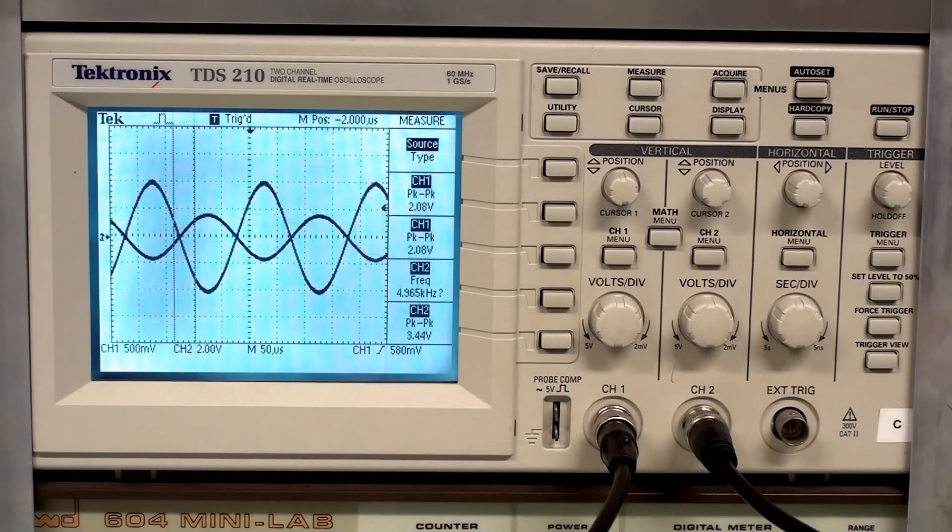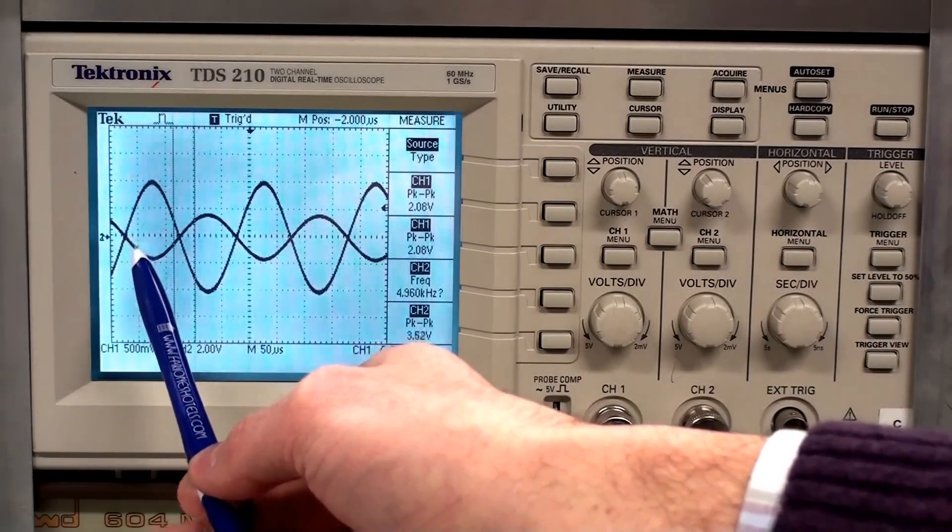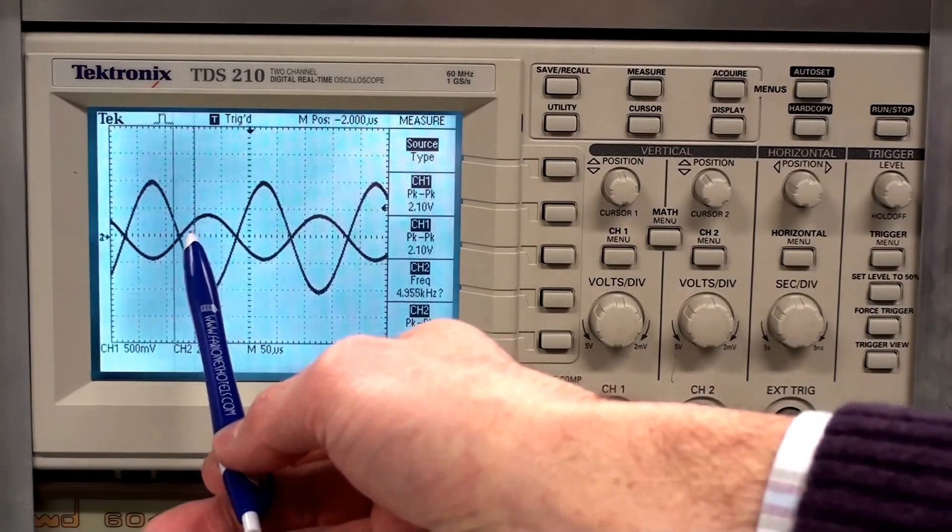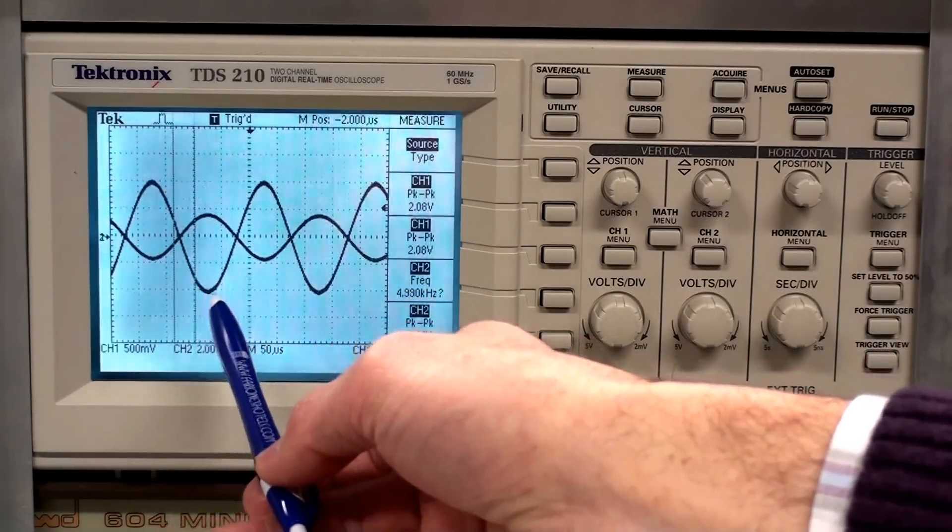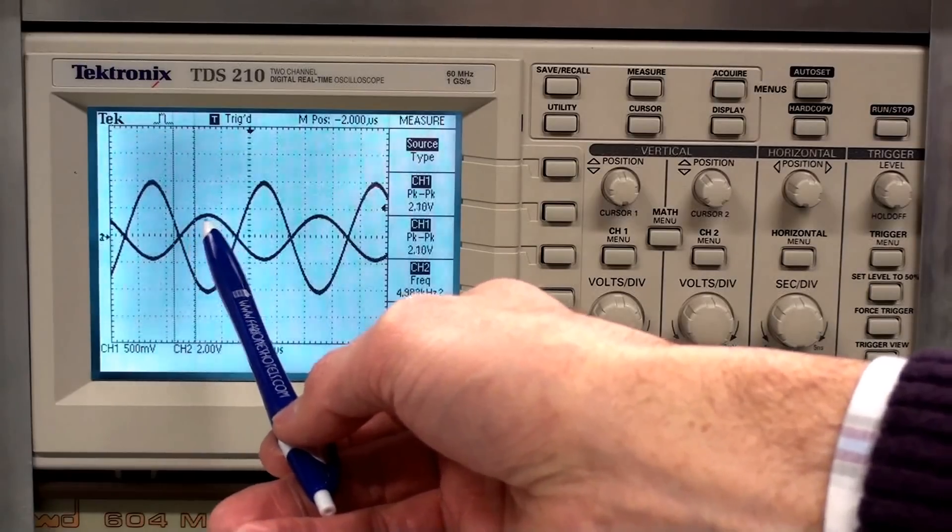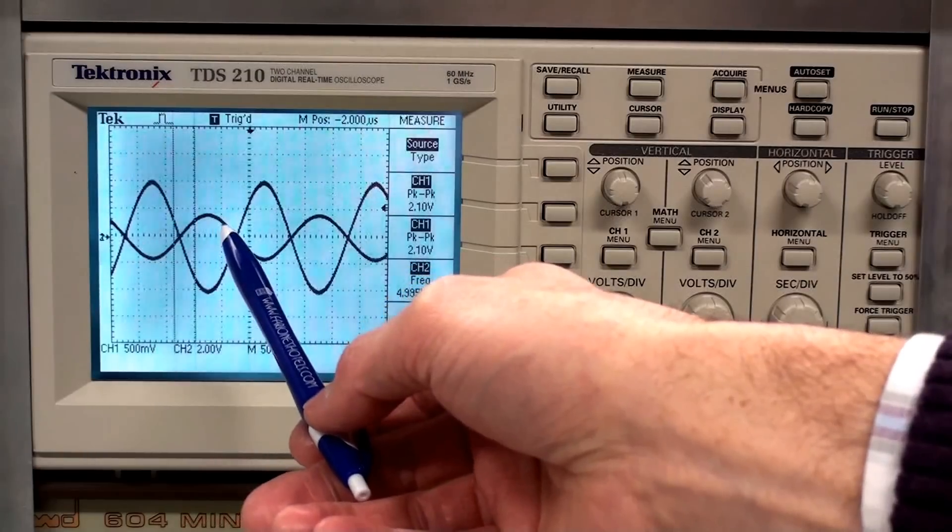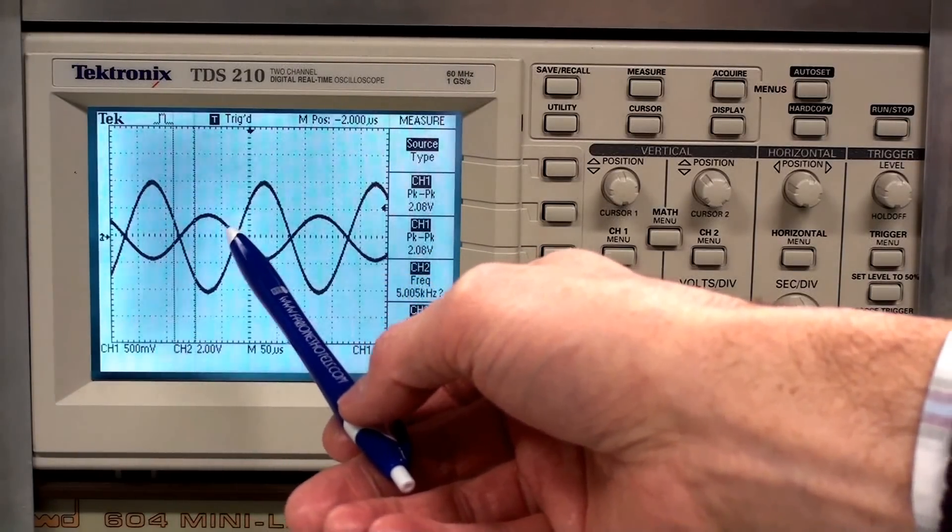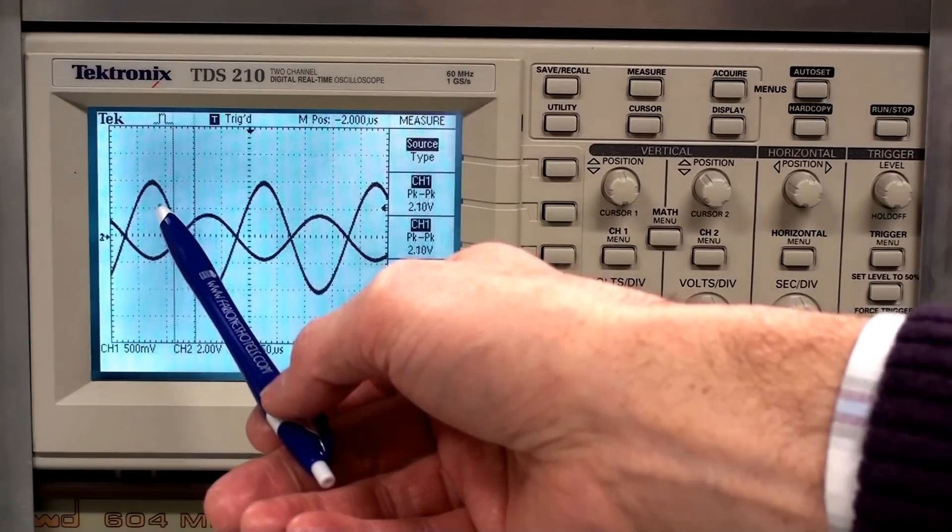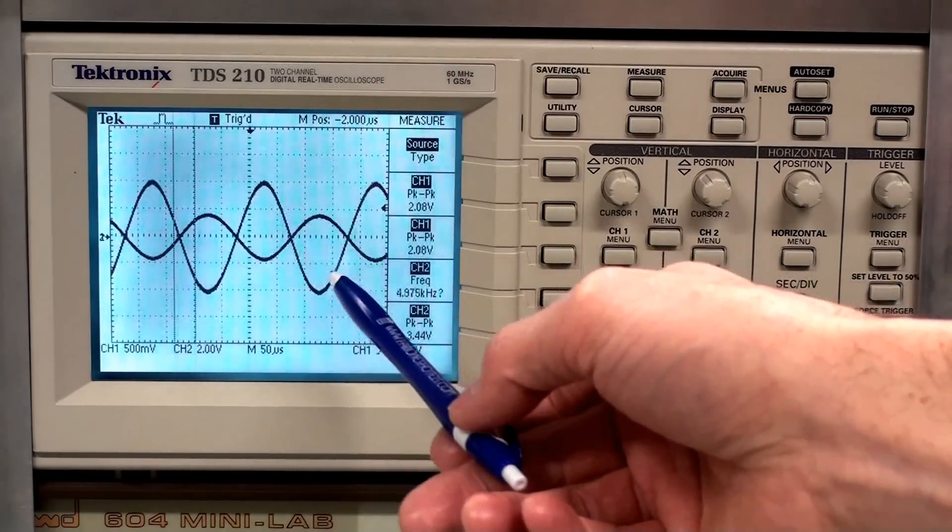The first thing you should notice about the two traces here is that the output trace is not in phase with the input signal. We can see that the peaks occur at different times. In this case, the output is 180 degrees out of phase with the input. And we can see that from the trace.